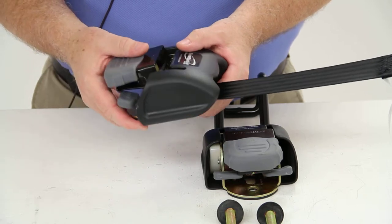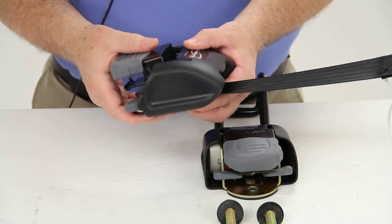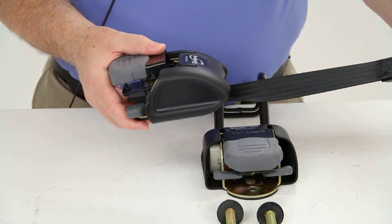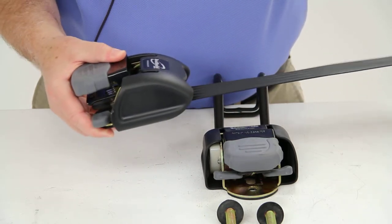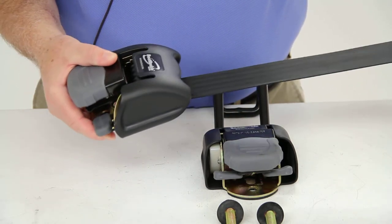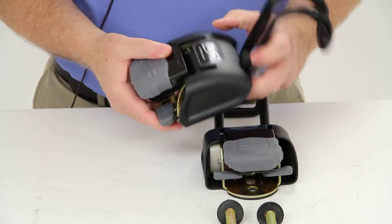Then to release it from the boat, to remove it, you would just push down on the release lever again. That will allow the strap, you can remove the J-hook from the gunwale. The strap will automatically retract back into the housing.